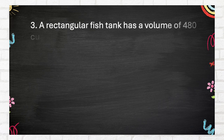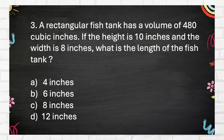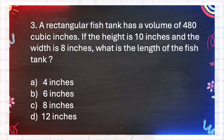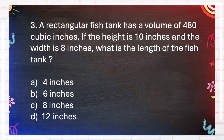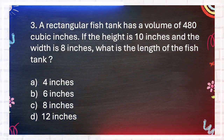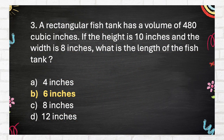Number 3. A rectangular fish tank has a volume of 480 cubic inches. If the height is 10 inches and the width is 8 inches, what is the length of the fish tank? A. Four inches. B. Six inches. C. Eight inches. D. Twelve inches. The correct answer is B, 6 inches.